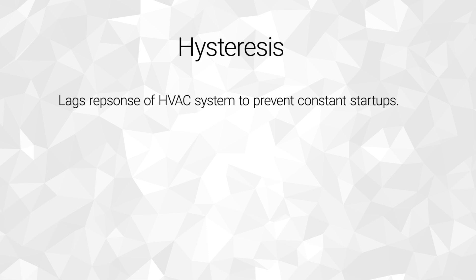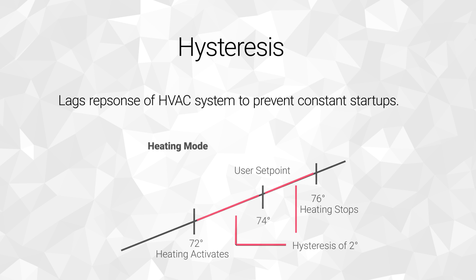Hysteresis is a way to lag the response of your HVAC system for the purposes of saving energy and equipment wear and tear. For example, with the set point at 74 degrees in the winter, the system may warm the space to 76 degrees, shut off, then allow the space to cool down to 72 degrees before heating again. Typically on newer thermostats, the hysteresis and dead bands are pre-programmed into the controls, so there's no need for occupants to worry about these features. Overall, the minimalism of a single set point makes for simple, intuitive user interaction.